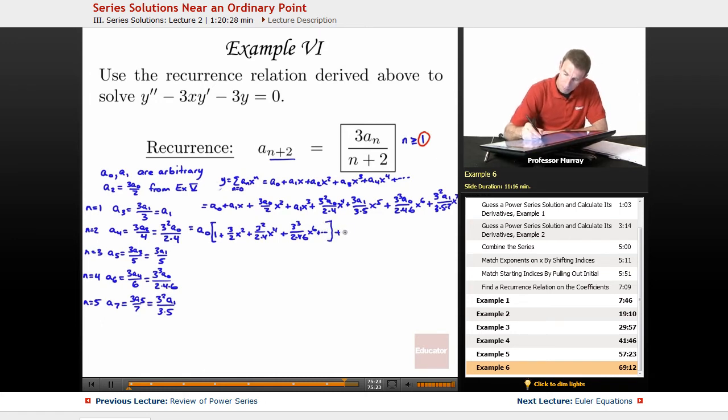And A1 is X plus X cubed, I'm going to write that as 3 over 3 to make a pattern work better later, plus X fifth, the coefficient of X to the 5th is 3 over 3 times 5, the coefficient of X to the 7th is 3 squared over 3 times 5 times 7, and so on. That's our series for A1.